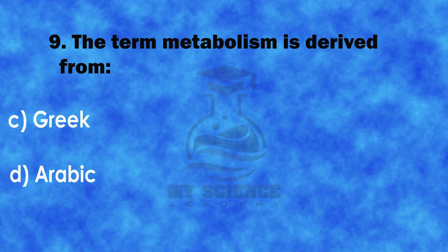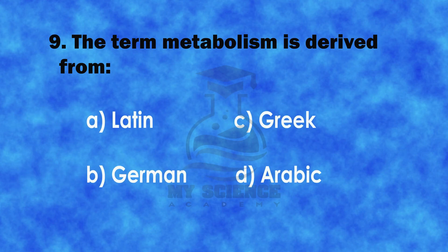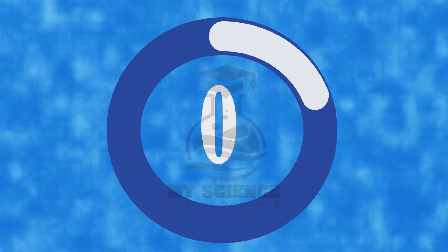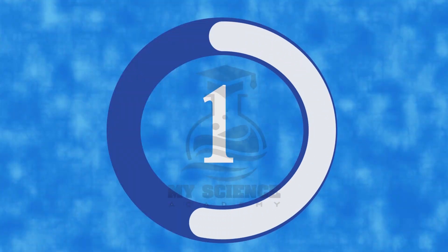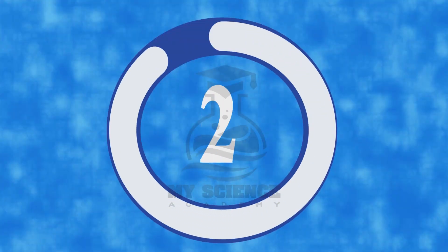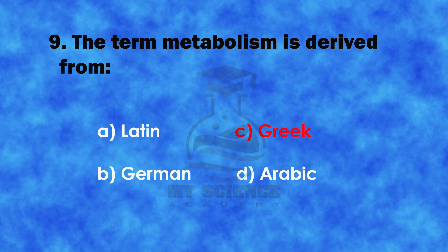Question 9: The term metabolism is derived from: A. Latin, B. German, C. Greek, or D. Arabic. The correct answer is C. Greek.